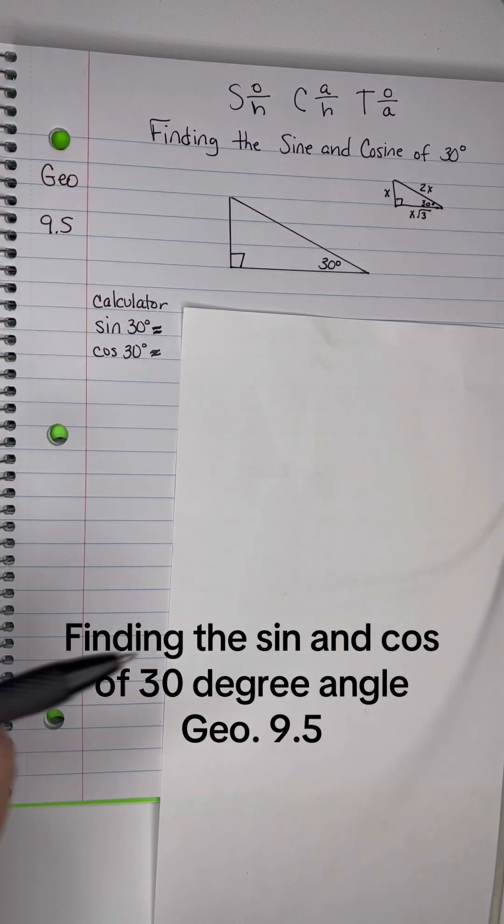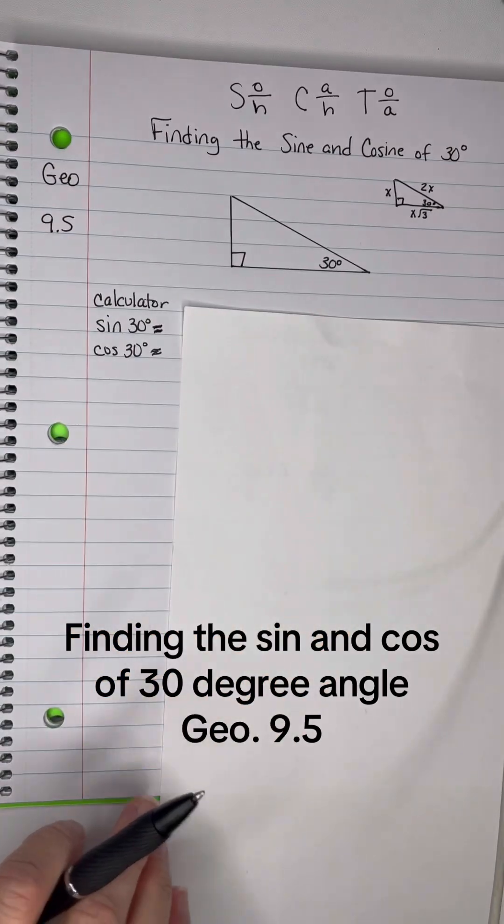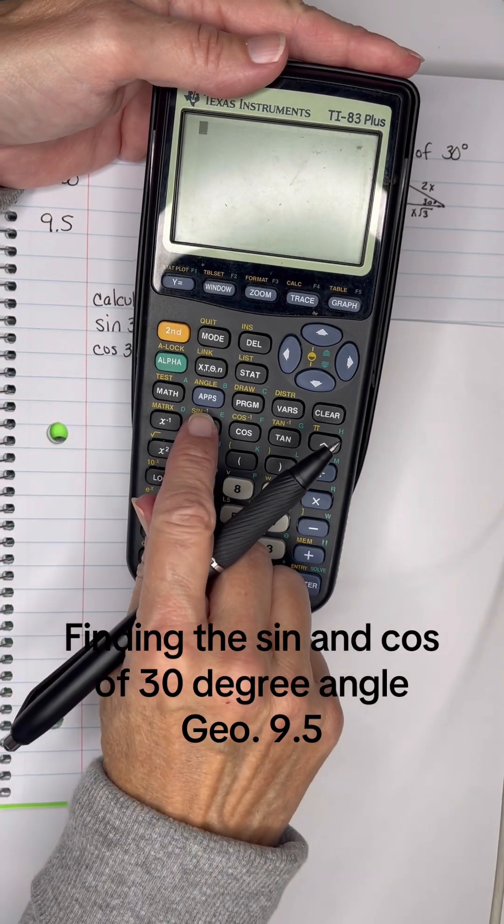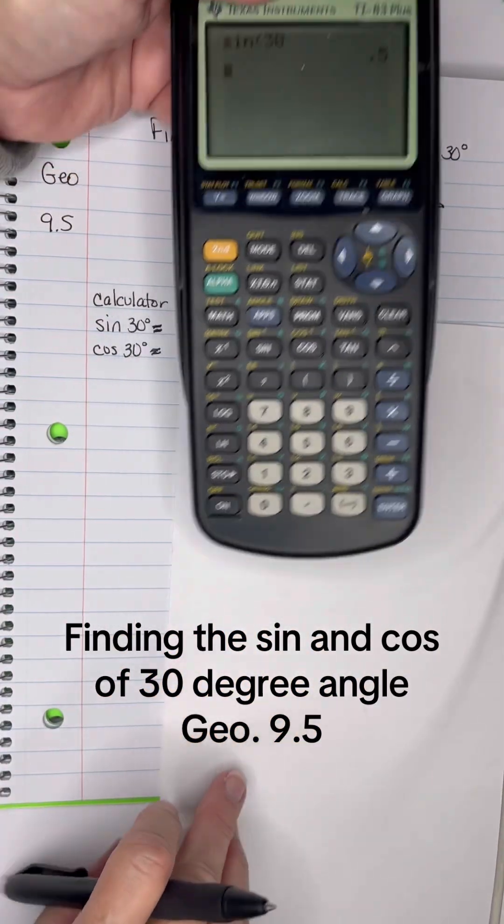So let's start off, we've got a triangle that's 30, 60, 90, and let's start off finding the sine of 30 degrees just with the calculator. So in degree mode, sine of 30 is 0.5.